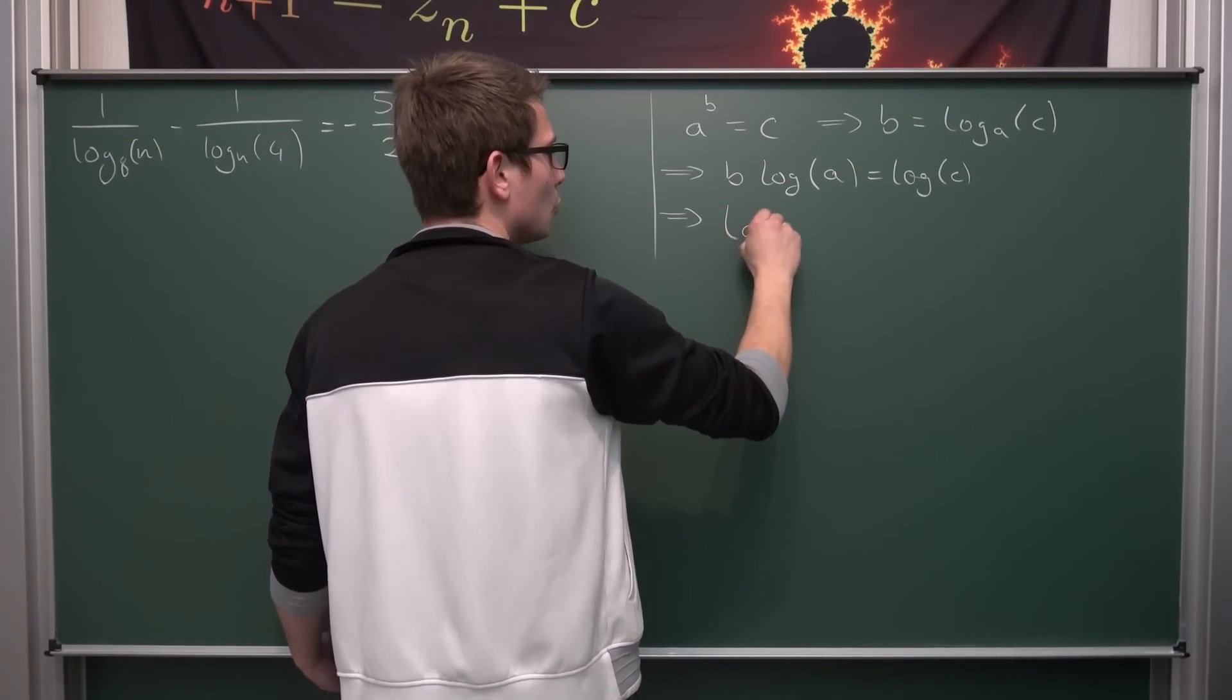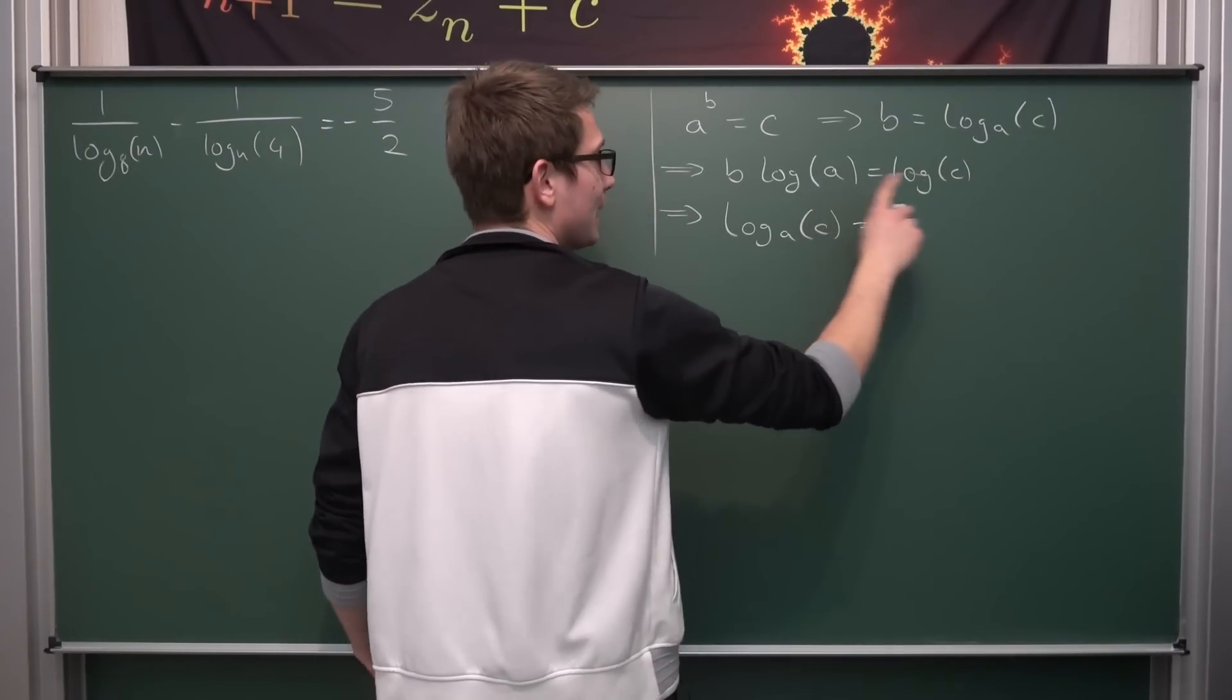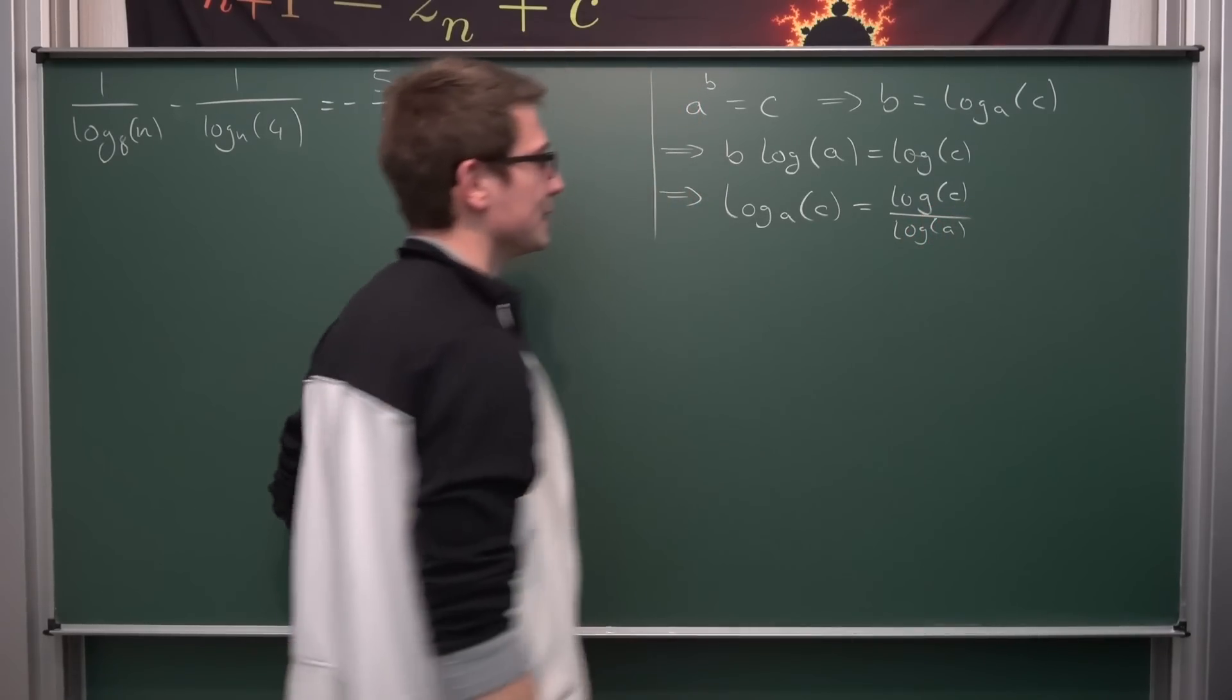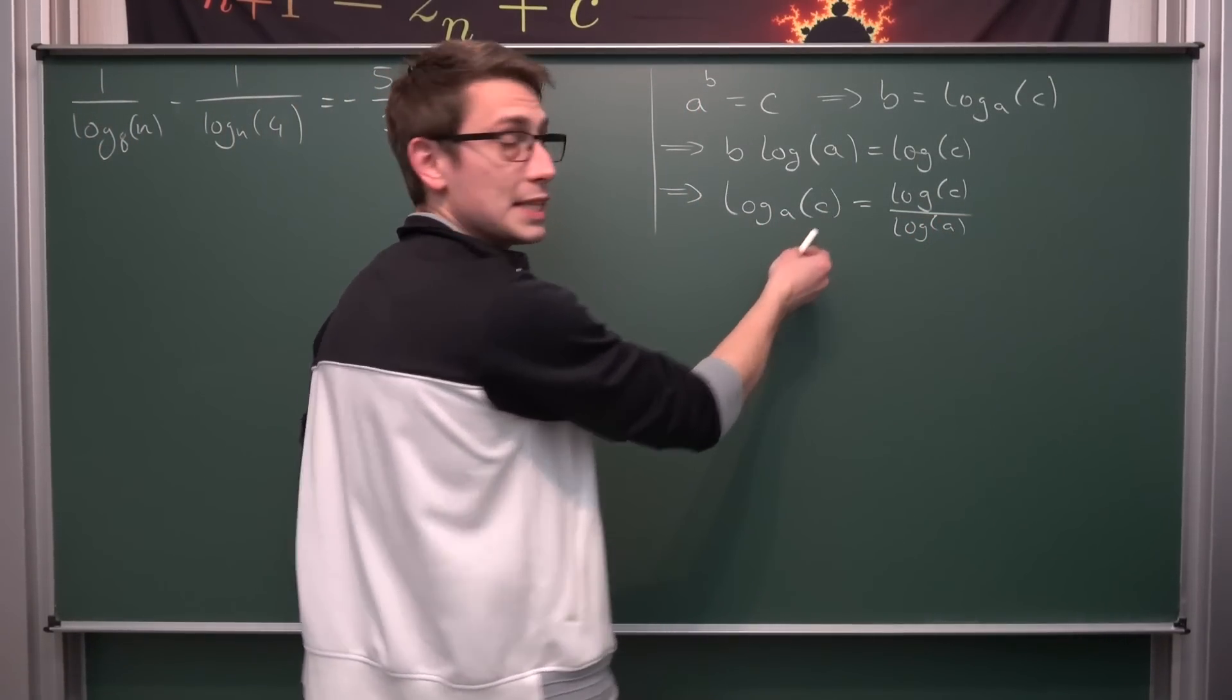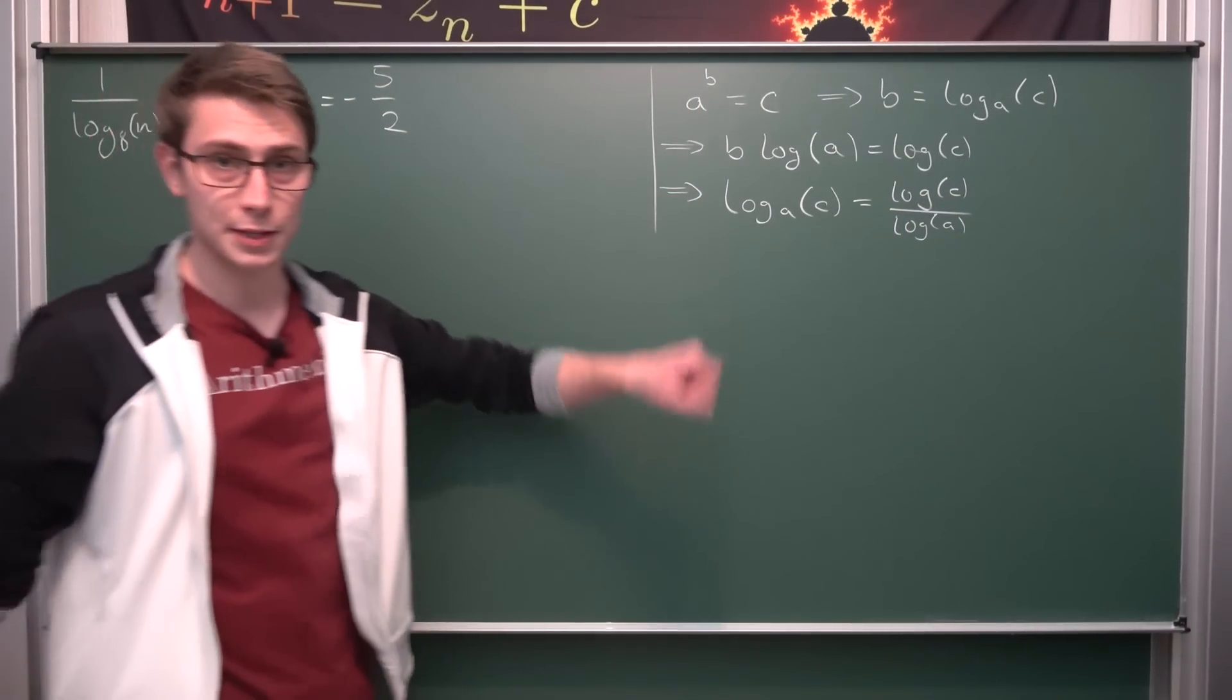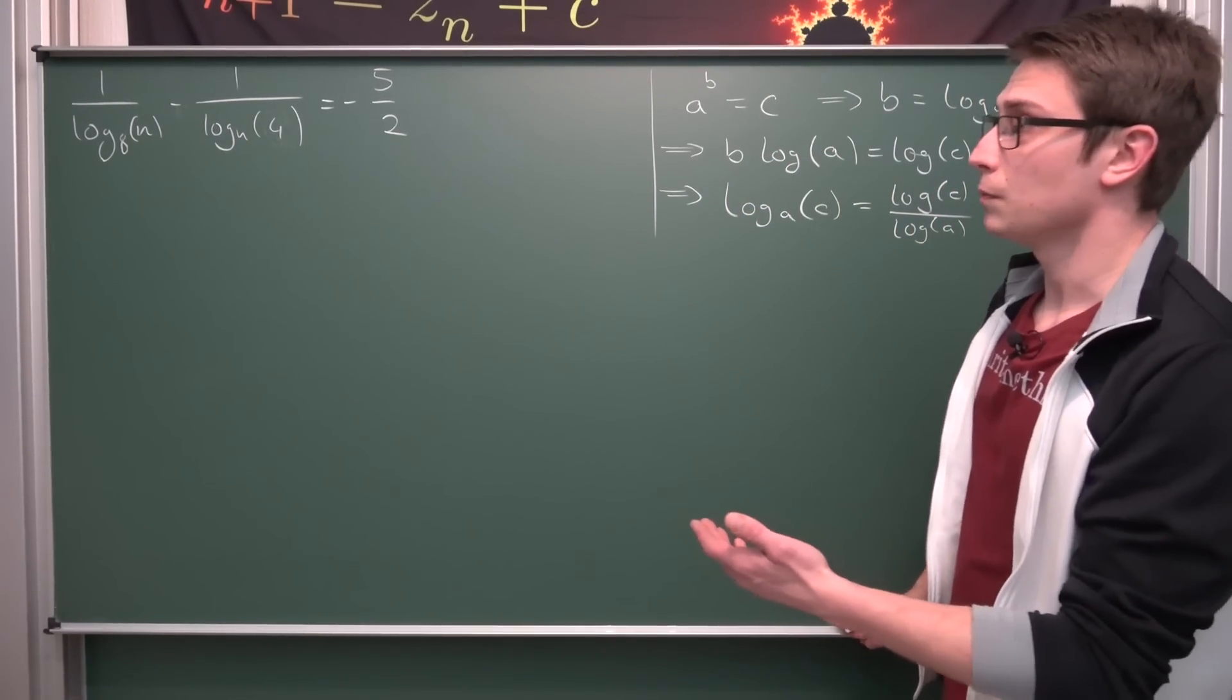This right here is the change of base formula. If we have the log base a of c, it's the same as the natural log of c divided by the natural log of a. And we're going to make use of this formula giving us natural log of n in the process nicely.